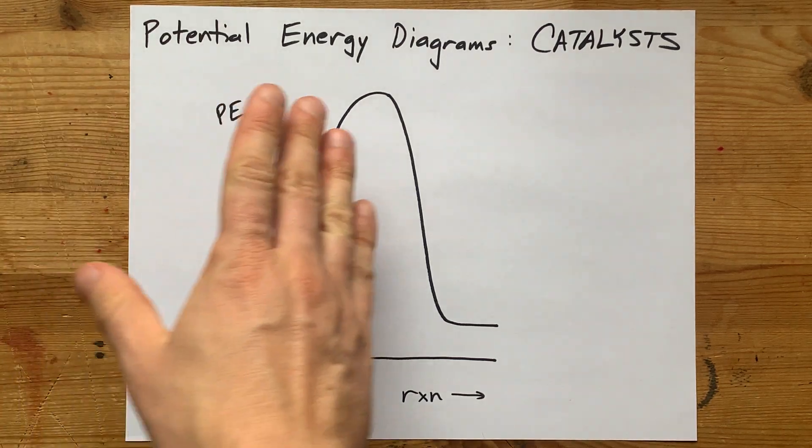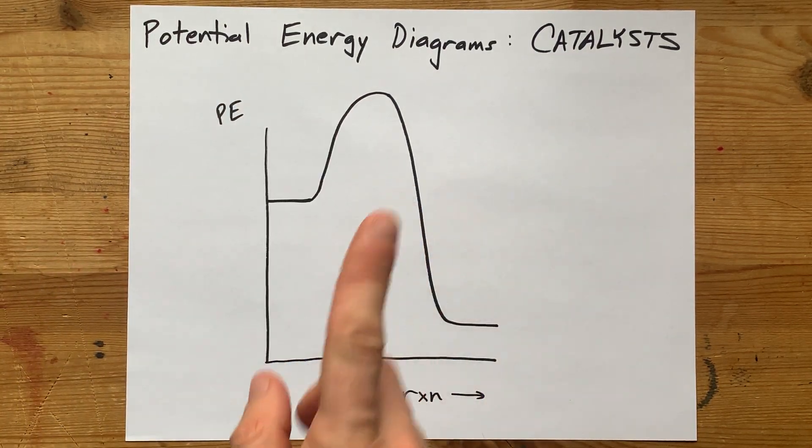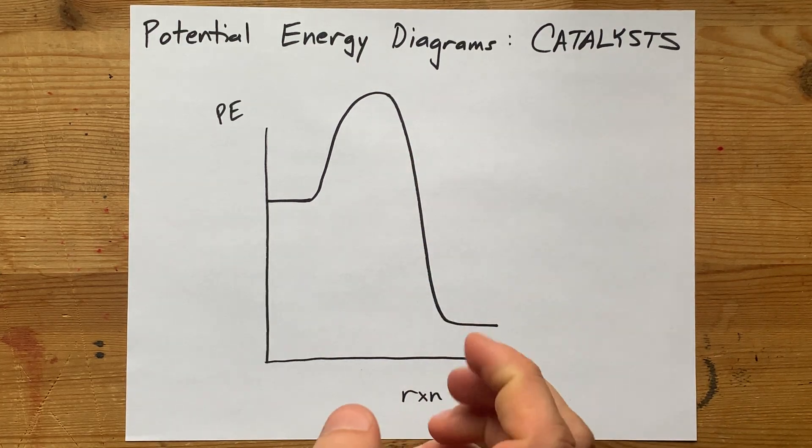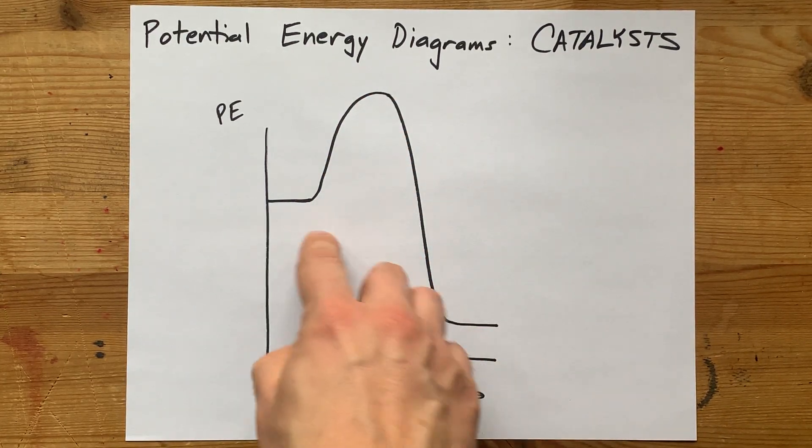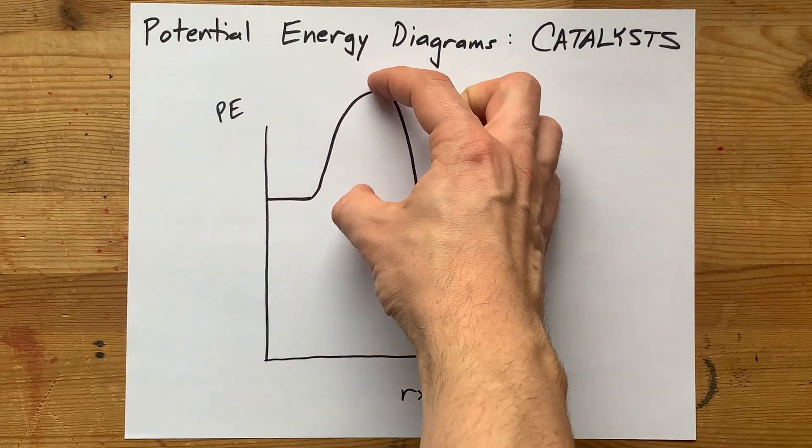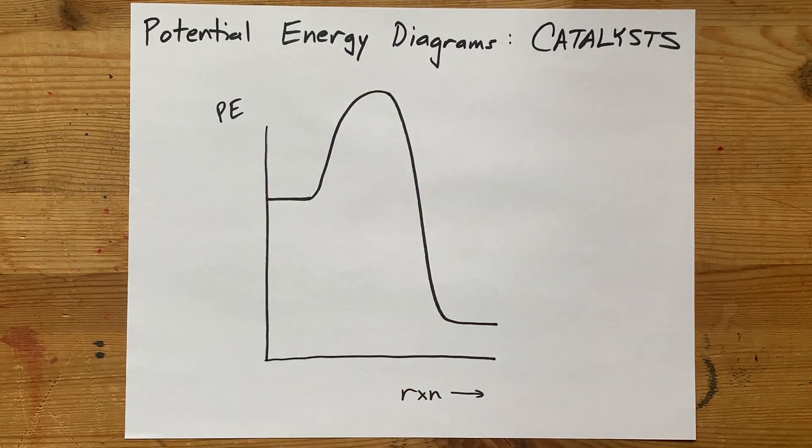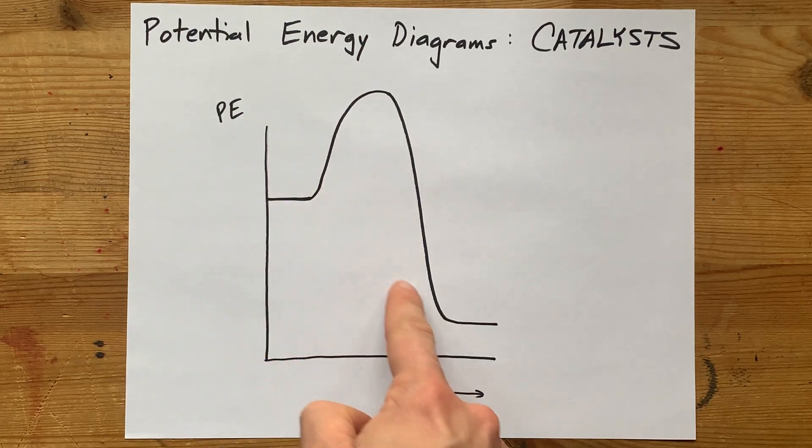How is the potential energy diagram affected by the addition of a catalyst? Here we have a one-step reaction with a pretty high activation energy, that's the size of the hump from the reactants, and it's exothermic overall.